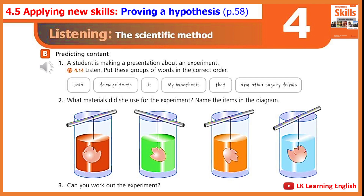4.14. Lesson 4.5. Applying new listening skills: Proving a hypothesis. Drinks can damage your teeth. Exercise B. Listen. Put these groups of words in the correct order. My hypothesis is that cola and other sugary drinks damage your teeth. The experiment: I bought four types of drink — Cola, Fruit drink, Fresh fruit juice, and Water. I also brought in some clean eggshells. Why eggshells? Because they are made of similar material to human teeth.